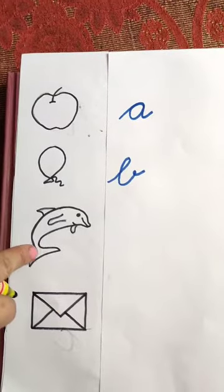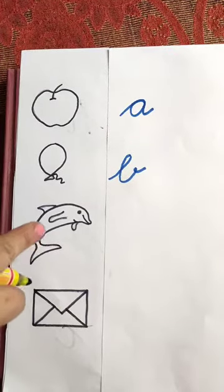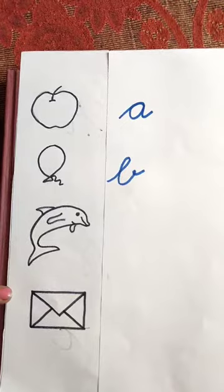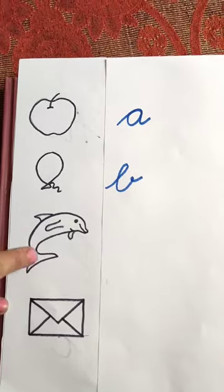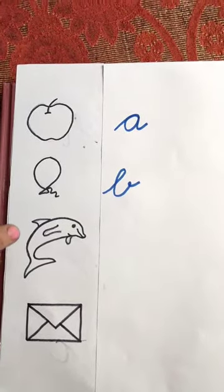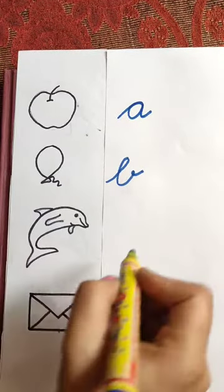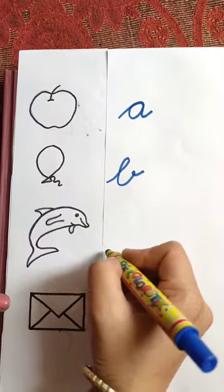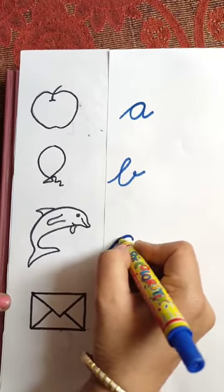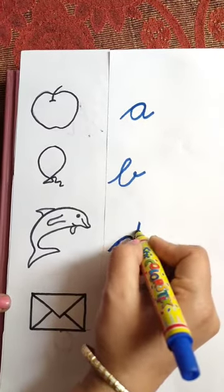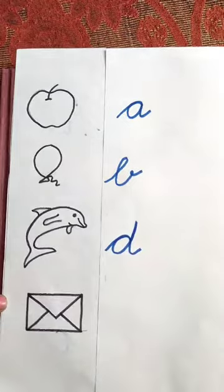This is the picture of dolphin. Dolphin. Dolphin. The beginning sound of dolphin is D. And D is the sound of D. So, we will write here D. How we will write D? We will write D like this.